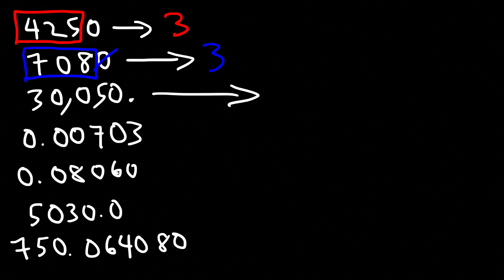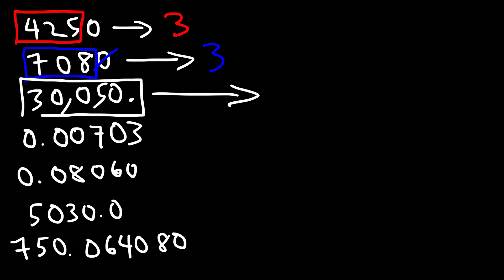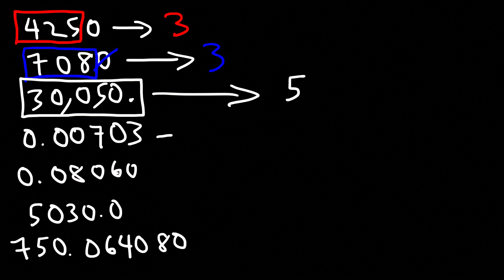For 30050. with a decimal point, the trailing zero is counted, and all of the zeros in between the three and five are also counted. So this example has five significant figures.